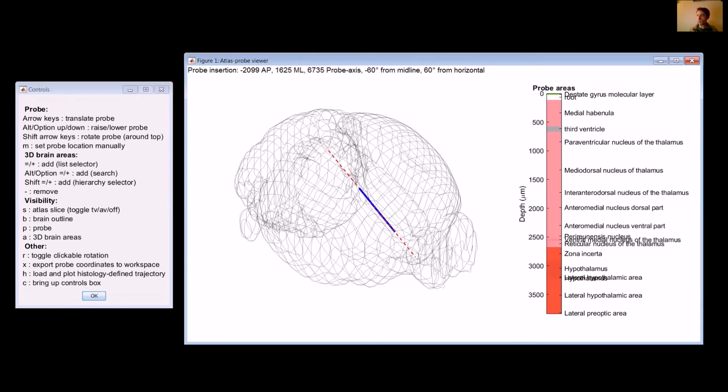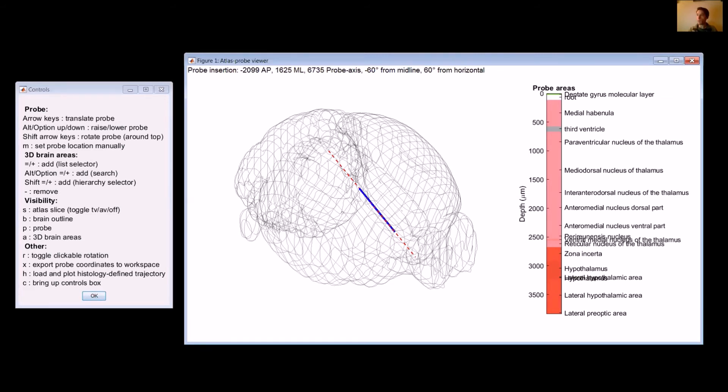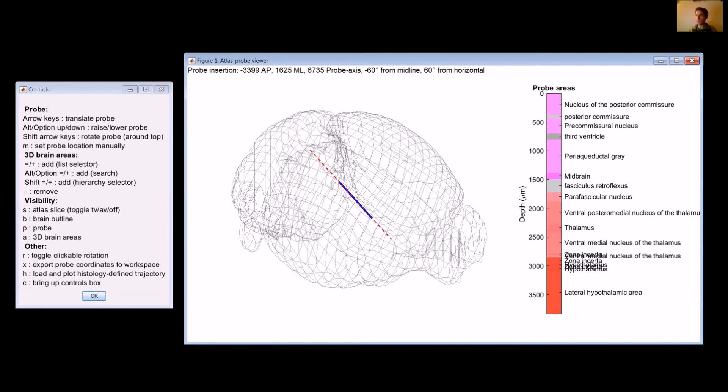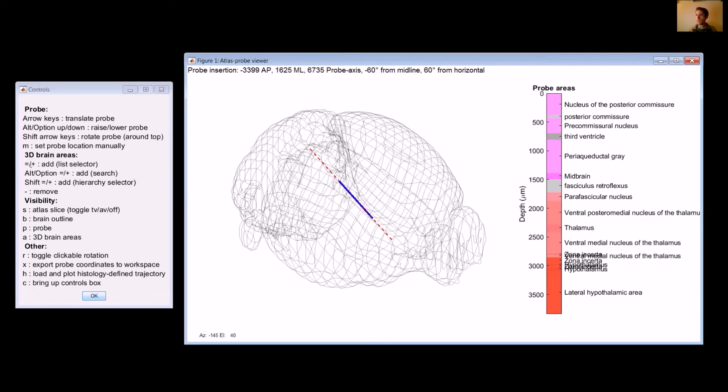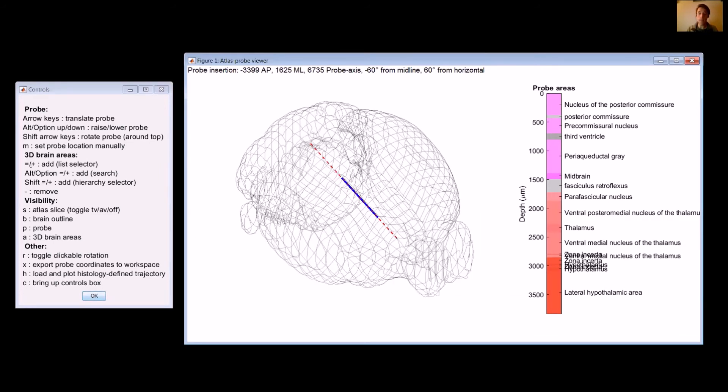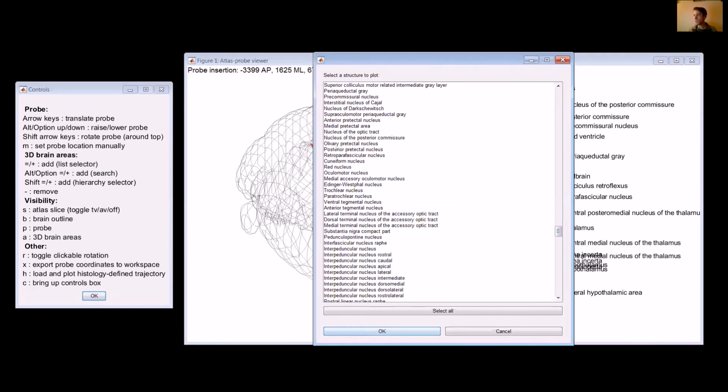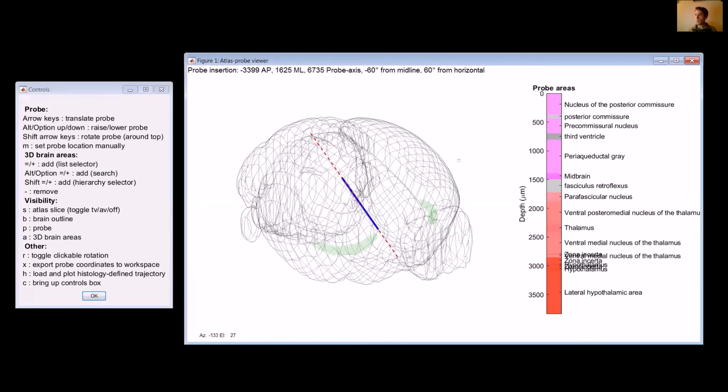Probably the most important feature that you'll use is this 3D brain areas thing. In this case, let's say I have an area that I want to hit and I want to plot it in 3D and then I want to move my probe around so that I can have it go through that area. There are three ways to pick an area based on your favorite kind of hierarchy. First of all, you just hit the plus key. And I should mention that I guess if you don't have a num pad, this is also the equals key. So I'll hit plus here. It'll bring up all of the areas that the Allen Atlas has parsed so you can pick one of them. Let's pick the clostrum. And then it'll draw this in 3D space. So that's one way to do it, is hit plus and it brings up everything.